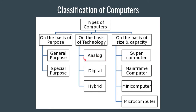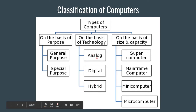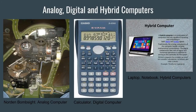On the basis of technology, computers can be classified as analog, digital, and hybrid. An example of an analog computer is the Norden bombsight, used by the US Army in World War 2 to fix a target on which they wanted to drop bombs. It is based on hydraulic principles.